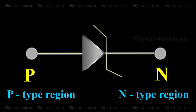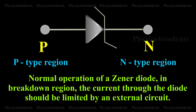The symbol of a Zener diode is shown in the animation. For normal operation of a Zener diode in breakdown region, the current through the diode should be limited by an external circuit.